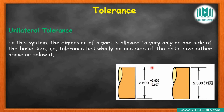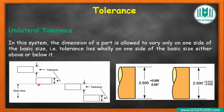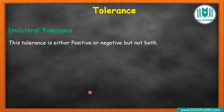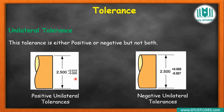So this is unilateral tolerances. In unilateral tolerances, for a given basic size, either only the upper limit or only the lower limit is given — meaning tolerance is given on one side only. This can be either positive unilateral tolerances (only above the basic size) or negative unilateral tolerances (only below the basic size).